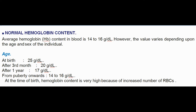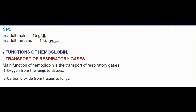Normal hemoglobin content: average Hb content in blood is 14 to 16 g/dL. The value varies depending upon age and sex. At birth: 25 g/dL; after third month: 20 g/dL; after one year: 17 g/dL; from puberty onwards: 14 to 16 g/dL. At the time of birth, hemoglobin content is very high because of the increased number of RBCs.